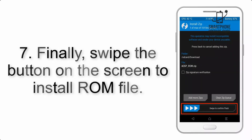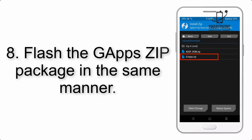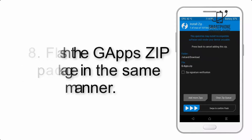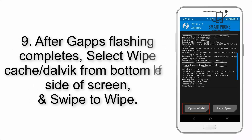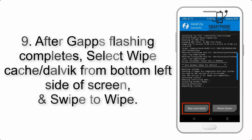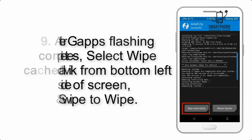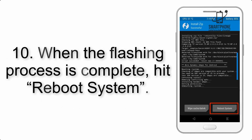Step 7: Swipe the button on the screen to install the ROM file. Step 8: Flash the GApps zip package in the same manner. Step 9: After GApps flashing completes, select Wipe Cache and Dalvik from the bottom left side of the screen and swipe to wipe.